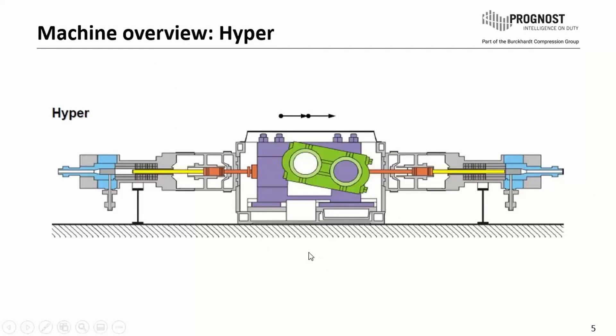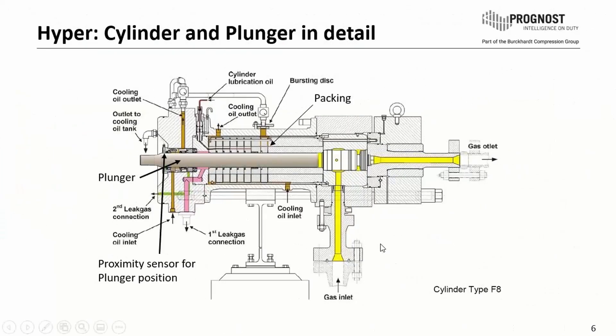Here again, a sectional drawing from the hyper compressor. In the next slides we'll have a detailed look only at this area: the cylinder itself with many parts in it. We'll look at the plunger, the packing, and the proximity sensor.